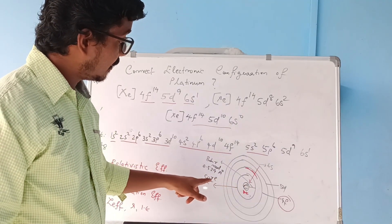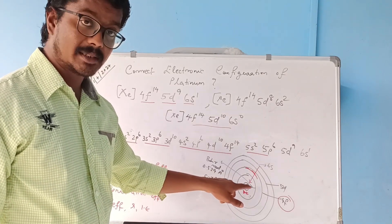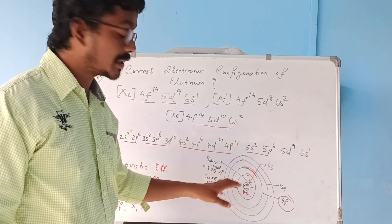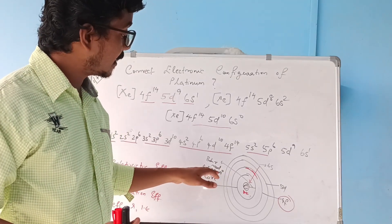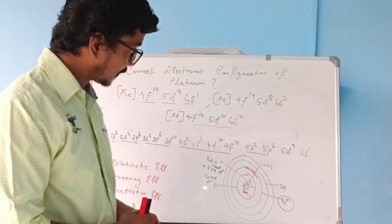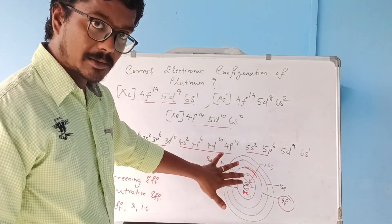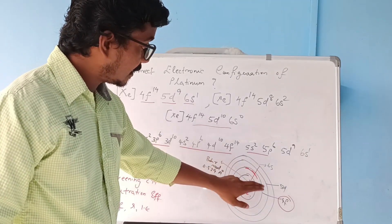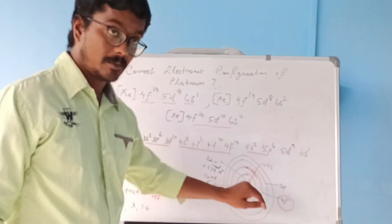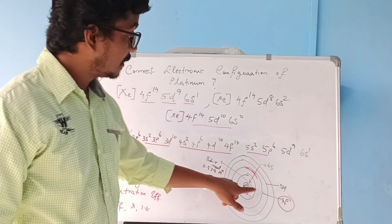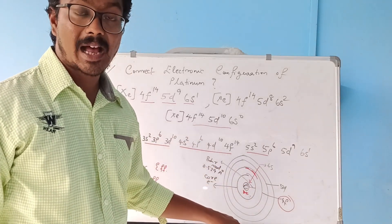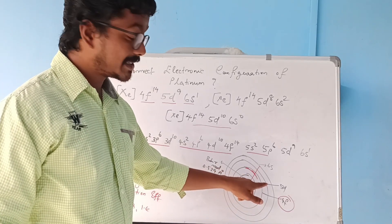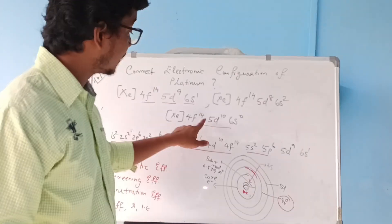Here is a picture representation of the platinum nucleus with its core electrons. The first shell of platinum — the Bohr first shell — is at a distance known as the Bohr radius, which is 0.529 Ångström. All inner core shells are represented as a single circle. The next shell is 4f, which is the anti-penultimate shell — the third from the last — and 5d is the penultimate shell, with 6s as the valence shell.